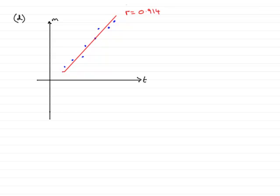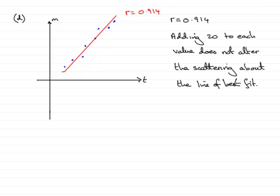So what I'm trying to say is that the product moment correlation coefficient will remain the same. The product moment correlation coefficient would still be 0.914 because adding 20 to each value does not alter the scattering about the line of best fit.